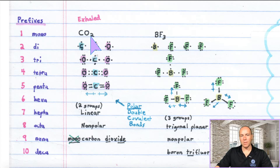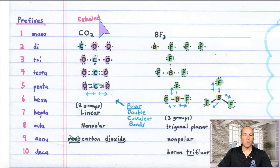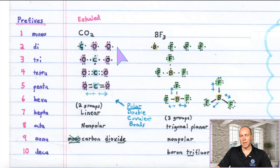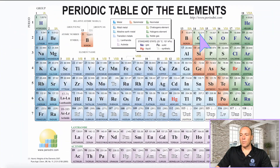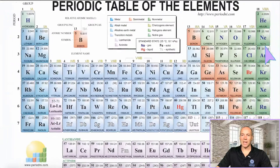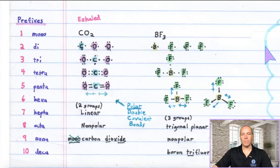Here we have CO2 — the stuff that we exhale. We breathe in oxygen, and after it does its job in the body, we exhale CO2. To get the Lewis structure, first you draw the Lewis dot structures of each atom in the formula: one carbon and two oxygens. Carbon is in group 4A on the periodic table, so it gets four dots. Oxygen is in group 6A, so it gets six dots.